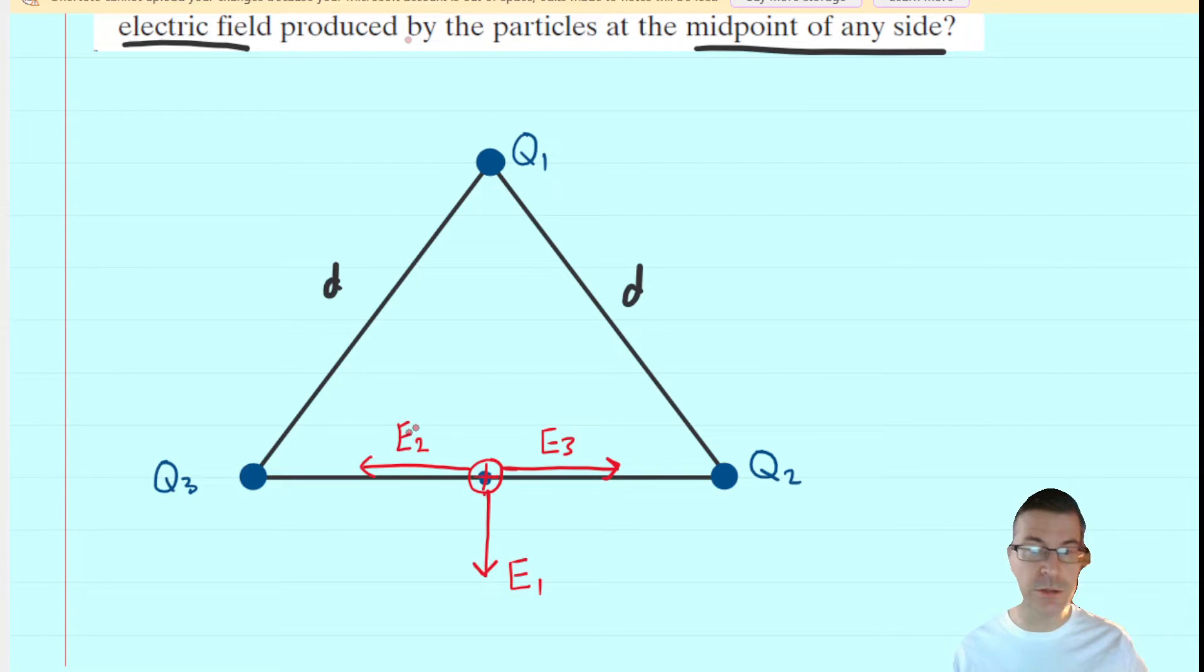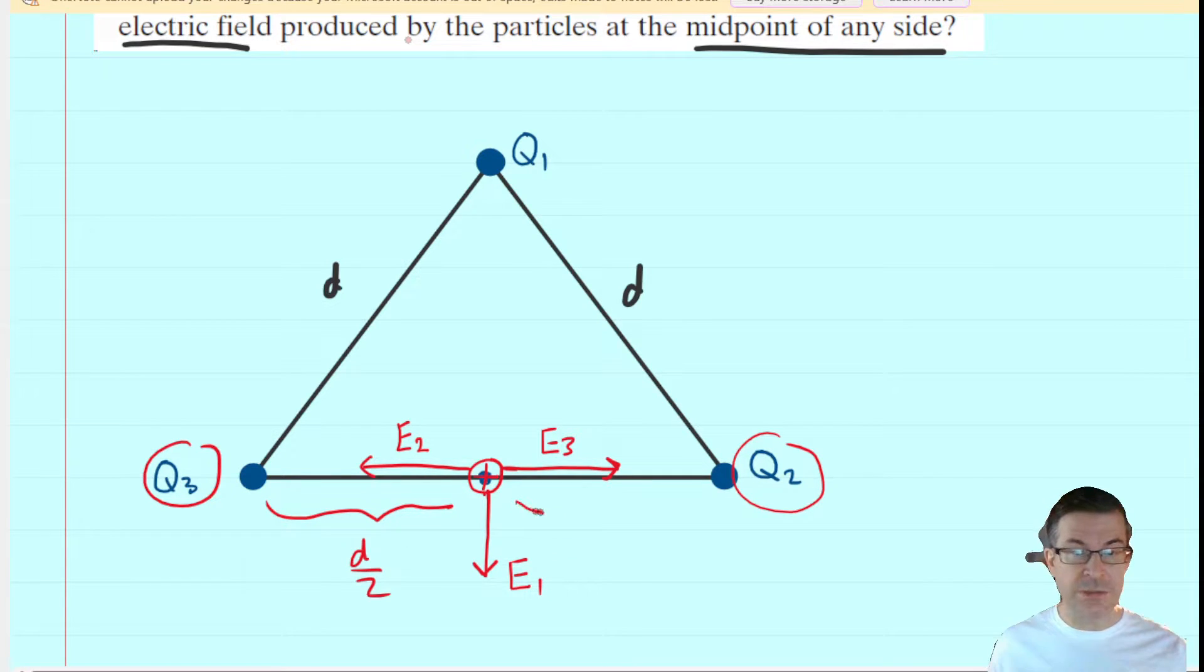Now, there's something interesting about E2 and E3. They are produced by charges of equal magnitude. Remember, Q2 and Q3 have the same magnitude. And they're also the same distance to this midpoint. That distance right there is d divided by 2. And this distance here is also d divided by 2. So the charges are the same for Q2 and Q3. The distances are also the same.